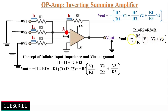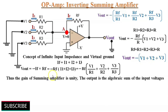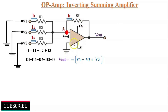When the gain of this amplifier is unity, all the resistors — feedback resistors and input resistors — have the same value, let's say R. We can further simplify this equation. Then the output voltage Vout is equal to minus (V1 plus V2 plus V3). Thus when the gain of the summing amplifier is unity, the output voltage is the algebraic sum of input voltages. The output of this summing amplifier is an inverting output, that is minus of (V1 plus V2 plus V3).